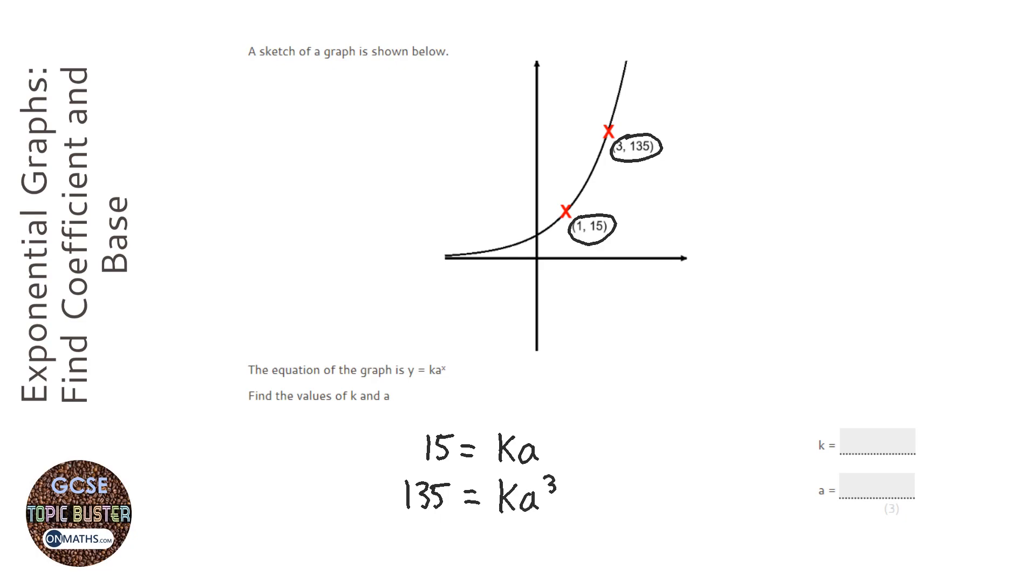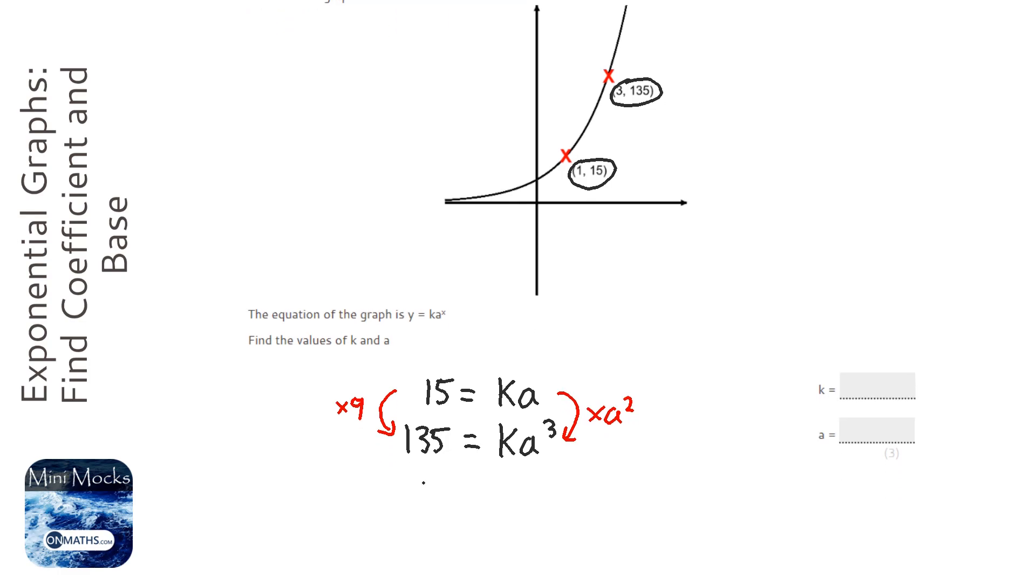Now I'm going to think about what I'd do to the right-hand side here to get from k a to k a cubed. Well, I'm going to times it by a squared. So I think, what do I do to this side? So I get my calculator and I do 135 divided by 15, which is 9, so I'm going to times it by 9. Therefore, a squared must be equal to 9, because we're timesing the left-hand side by 9 and we're timesing the right-hand side by a squared.